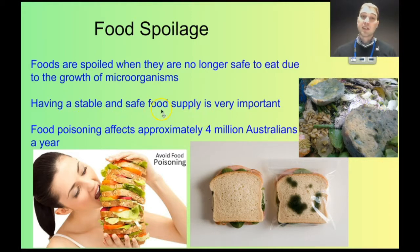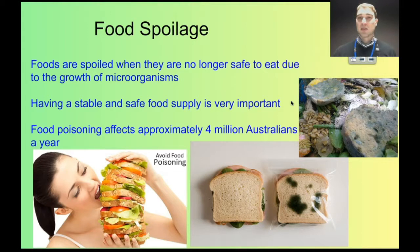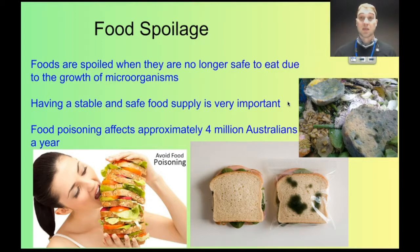Having a stable and safe food supply is very important. When foods go off or get contaminated and cause diseases, that can be a big issue. When I was young, there were some metworths being produced in South Australia from a company called Garibaldi. They weren't fermented properly, people got quite sick eating the metworths, and some people died.